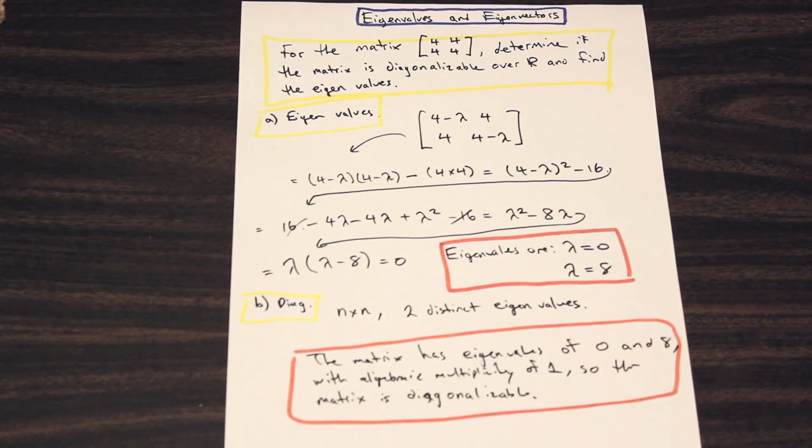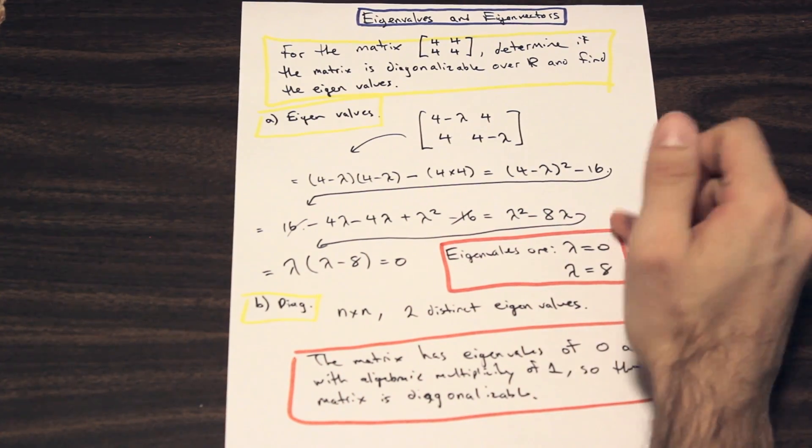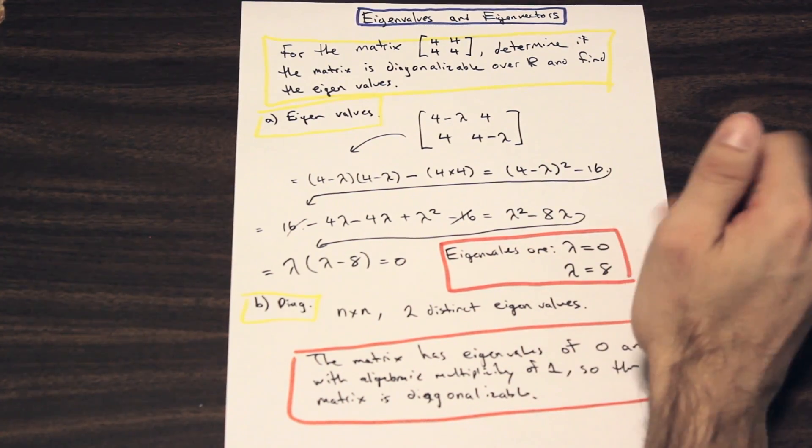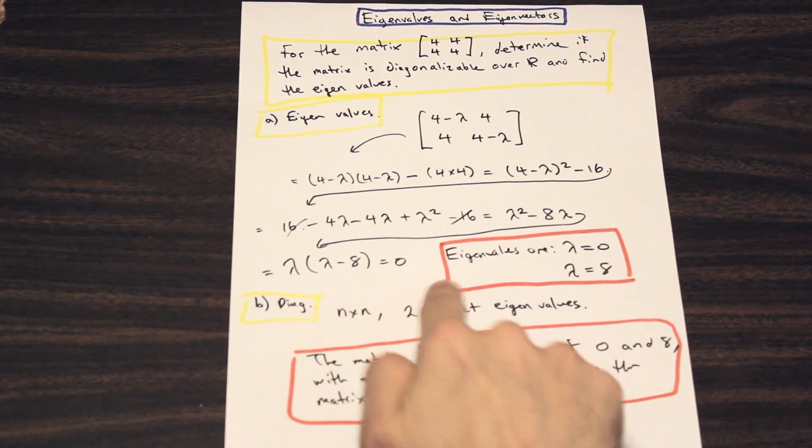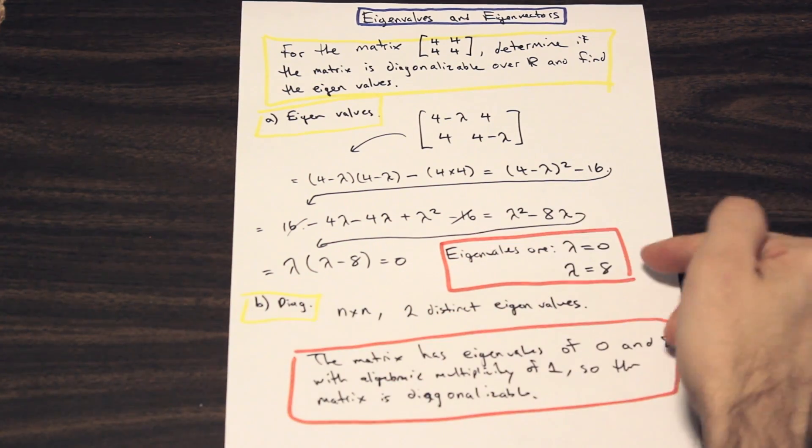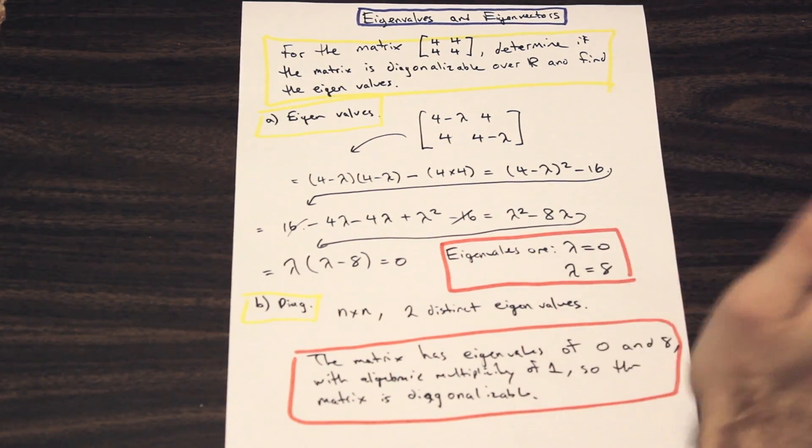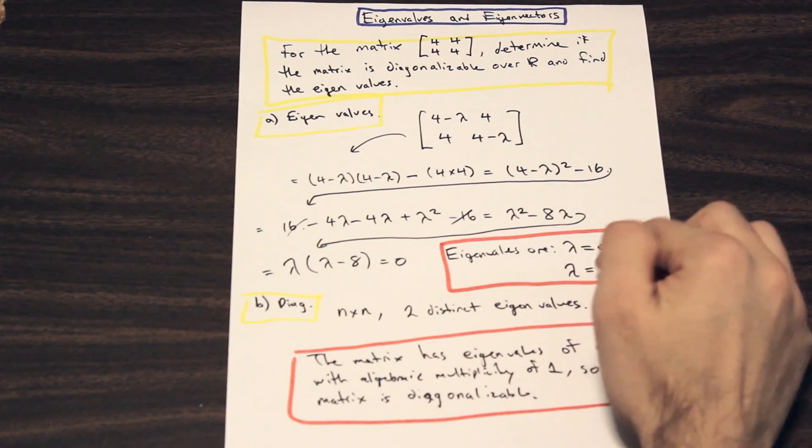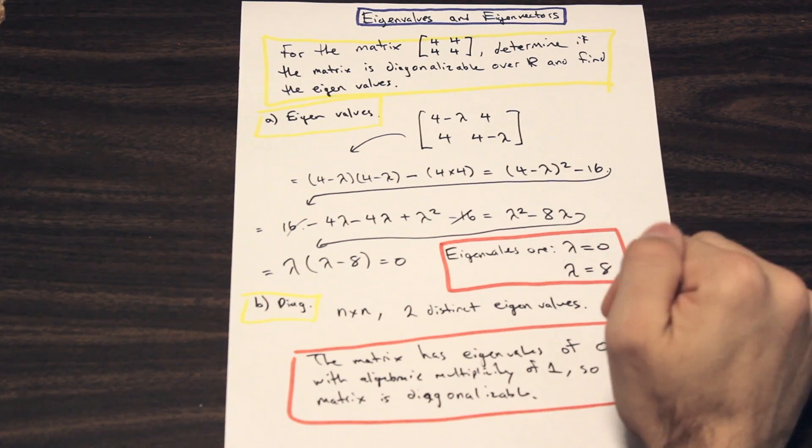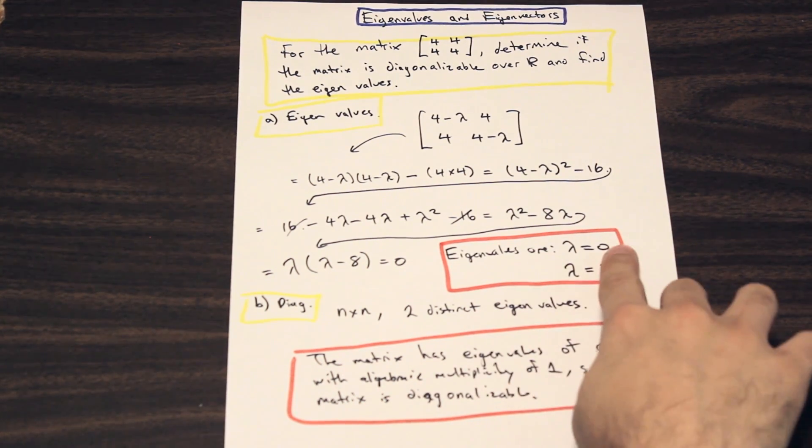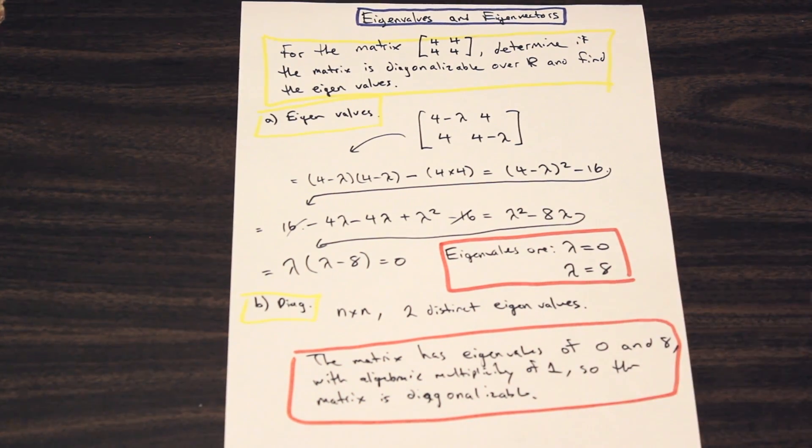Algebraic multiplicity means that you don't have eigenvalues that are repeating each other. For example, if this was a 3 by 3 matrix, you may find when you factor it that two of the roots are 8 and one is 0. Then in that case, the eigenvalues would still be 0 and 8, but the eigenvalue 8 would have algebraic multiplicity of 2 instead of 1. Since all of the roots have algebraic multiplicity of 1, so they're all distinct, we can say that it fits the requirements to be diagonalizable, and therefore it is.